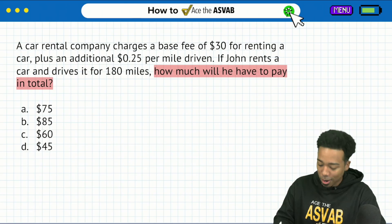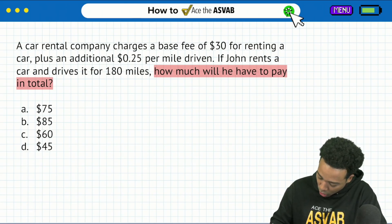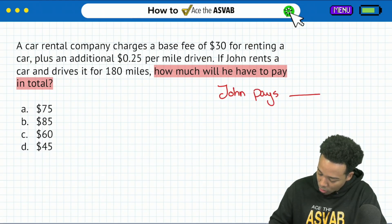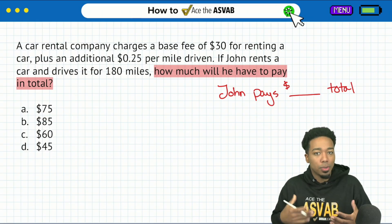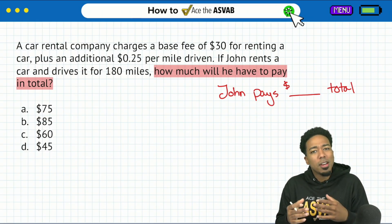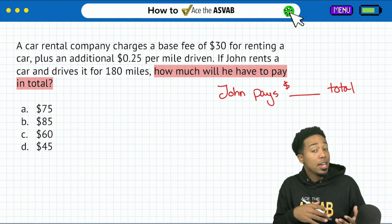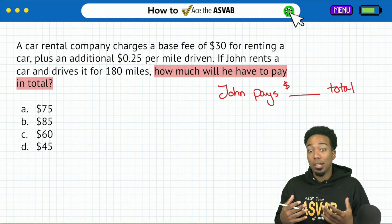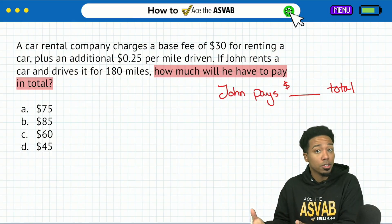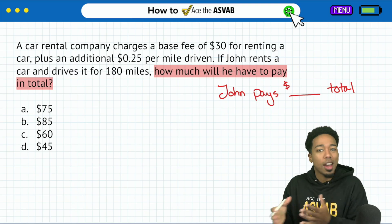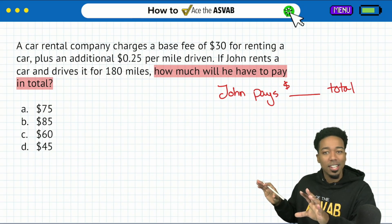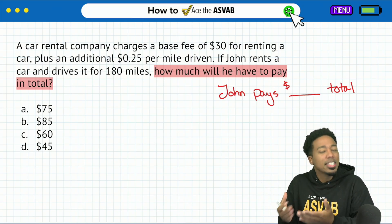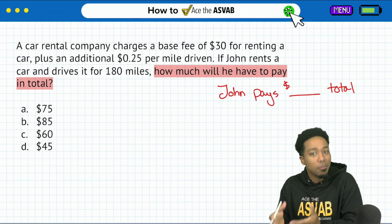It's going to be how much will he have to pay in total? Boom. So start right there, write that down. And we want to say, hey, John pays blank dollars total. So when you think about that contextually, over time, you'll think more about this. But when you think about, hey, am I looking for something in the beginning, the middle or the end? Well, when you're looking for the amount that you're going to pay in total, you're kind of looking for that end result.